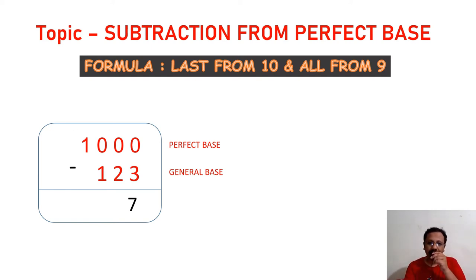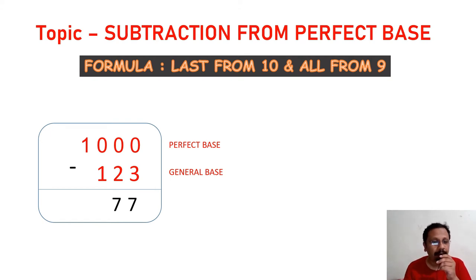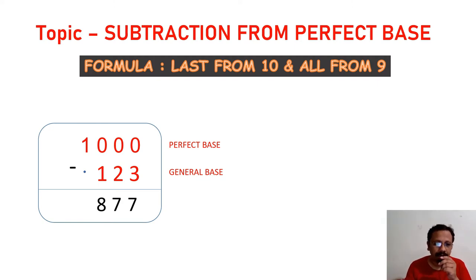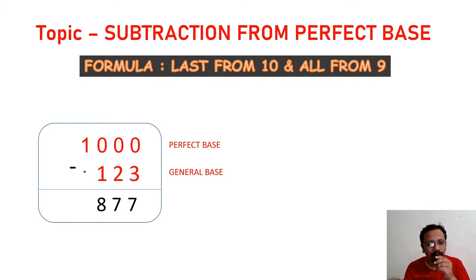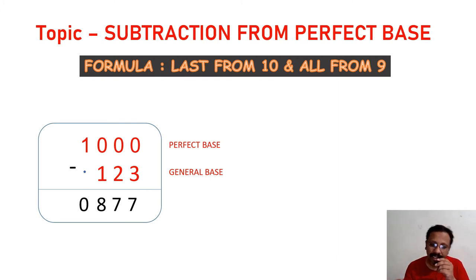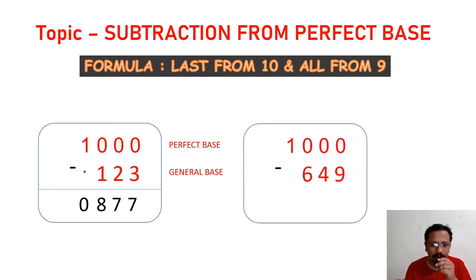Complementary of 2 using base 9 is 7. Complementary of 1 using base 9 is 8. Below the leading 1, we place a dot — in Vedic Math, the dot equals 1. So 1 minus 1 becomes 0. Our answer is 877.